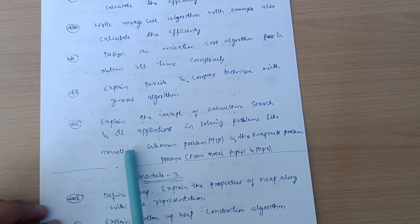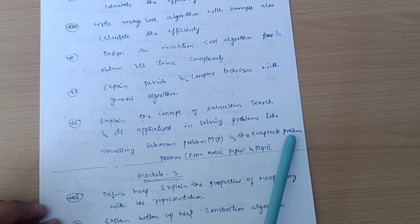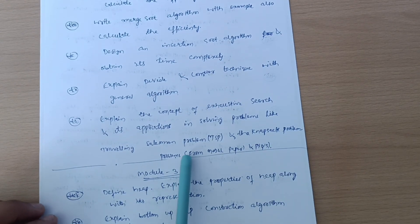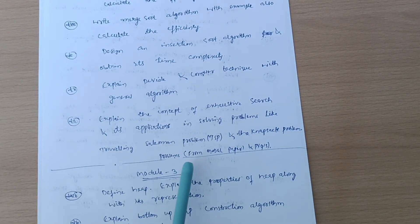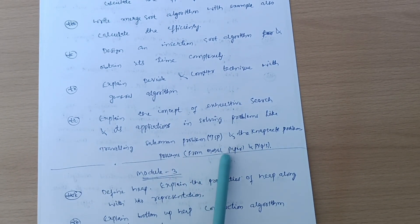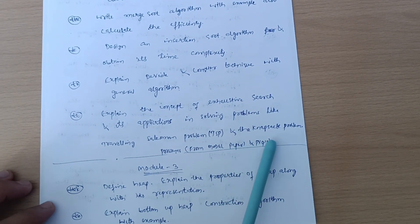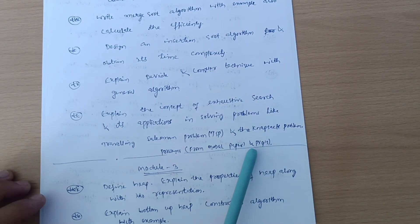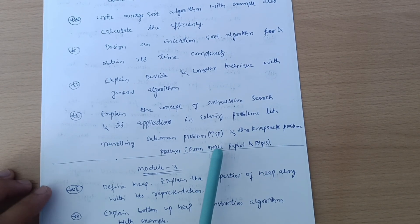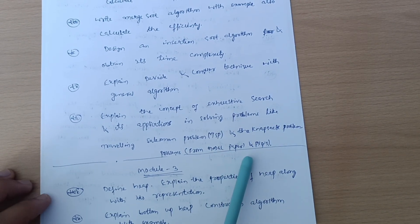Last is explain the concept of exhaustive search and its applications in solving problems like traveling salesman problem, most important one, and the knapsack problem. As far as problems are concerned, first go through the model question paper, later go for previous year question papers. If you're not getting previous year papers, let me know in the comment section. I will upload those on my Instagram account.